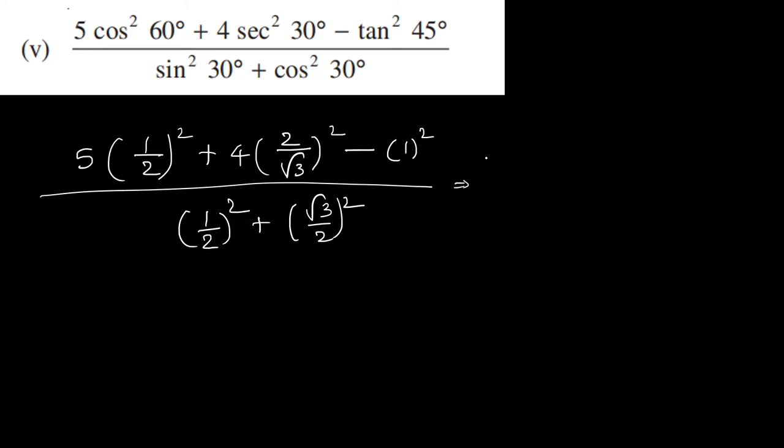So 5 into 1 by 2 whole square plus 4 into 2 by root 3 whole square. 2 square is 4, root 3 square is 3, minus 1.